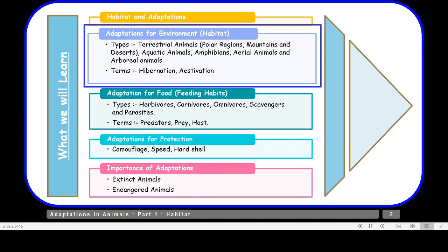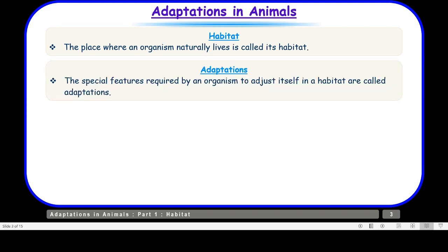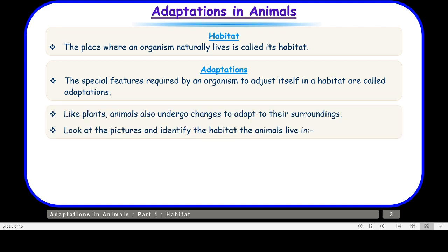Habitat is the place where an organism naturally lives. The special features required by an organism to adjust itself in a habitat are called adaptations. Like plants, animals also undergo changes to adapt to their surroundings.